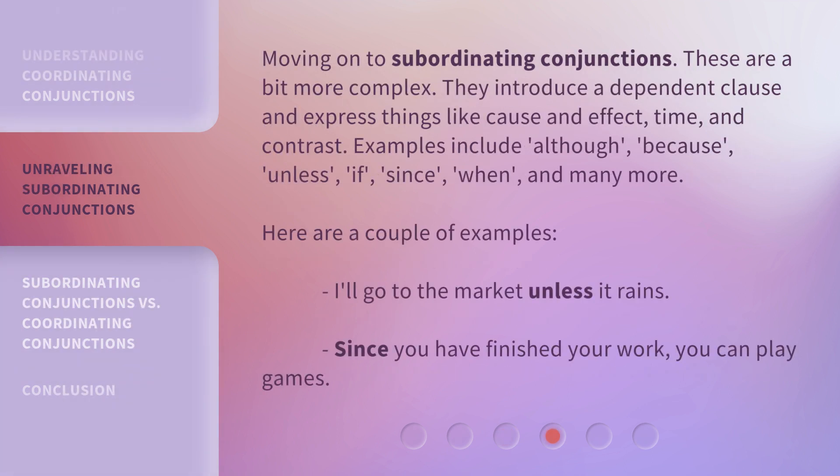Moving on to subordinating conjunctions. These are a bit more complex. They introduce a dependent clause and express things like cause and effect, time, and contrast. Examples include: although, because, unless, if, since, when, and many more. Here are a couple of examples: 'I'll go to the market unless it rains.' 'Since you have finished your work, you can play games.'